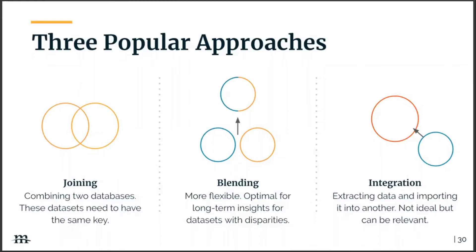There are multiple ways to centralize data. An easy entry-level solution is to integrate data from one source into another — like ads into Salesforce — but this doesn't fully solve fragmented data. To really achieve the benefits, you'll need to explore joining and blending data. Joining data combines two databases where one data set is combined into another — think two Excel files with commonalities. Blending is a more flexible approach where a new database, like a data warehouse, extracts data from different sources and aggregates it into a new data set. For example, if you have transactional data in Salesforce and quota data in an Excel workbook with different granularity, data blending is the best way to combine them.